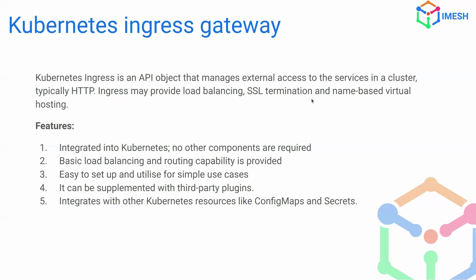The core features of Kubernetes Ingress Gateway are that it is integrated into Kubernetes natively — it comes out of the box with no special components or prerequisites required. It supports basic load balancing and routing capabilities, it is easy to set up, and since it comes with Kubernetes you'll have familiarity with the ecosystem, making it easy to integrate with ConfigMaps and Secrets. It can also be supplemented with third-party packages.